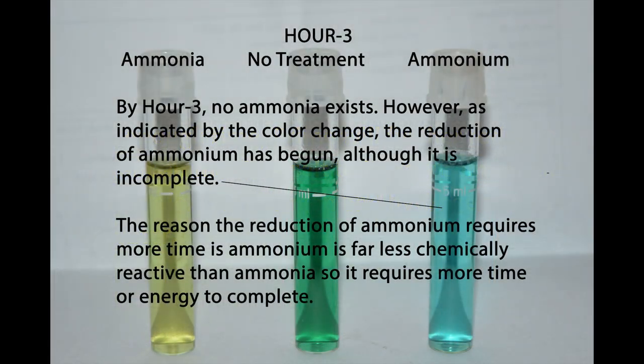In the three vials, by hour three, no ammonia exists. However, as indicated by the color change, the reduction of the ammonium has begun, although it is incomplete. The reason the reduction of ammonium requires more time is that ammonium is far less chemically reactive than ammonia, so it requires more time or energy to complete.